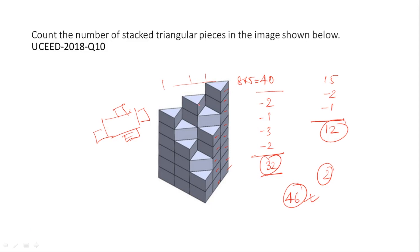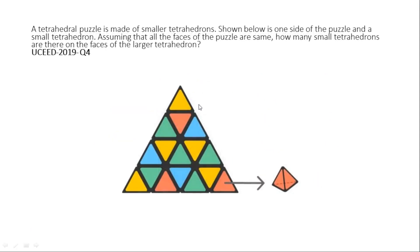Let's see one more question. You have to count the number of small tetrahedrons on the surface — on the face of this large tetrahedron. This big shape is a tetrahedron made up of smaller tetrahedrons. You have to find the total number of small tetrahedrons. This question is from UC19. You can pause the video and solve it, otherwise the solution follows.